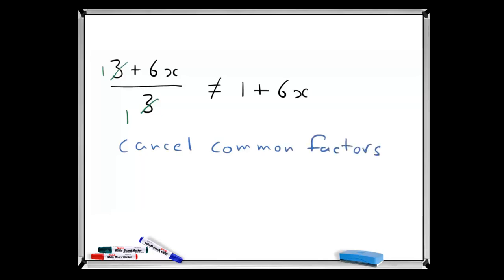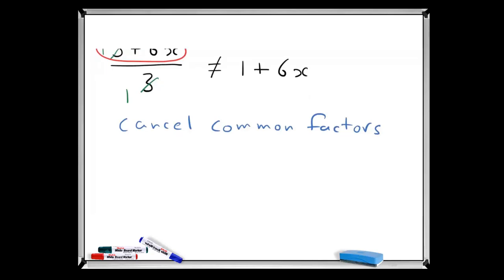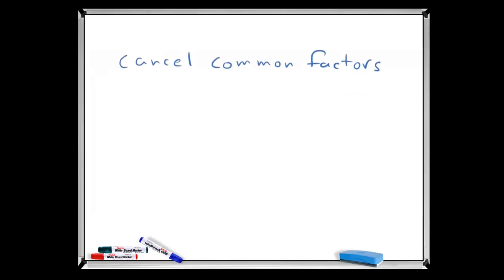The problem with the top line of this fraction, when we did the cancelling, is that it hasn't been factorised. So what we need to do is factorise the top line first.